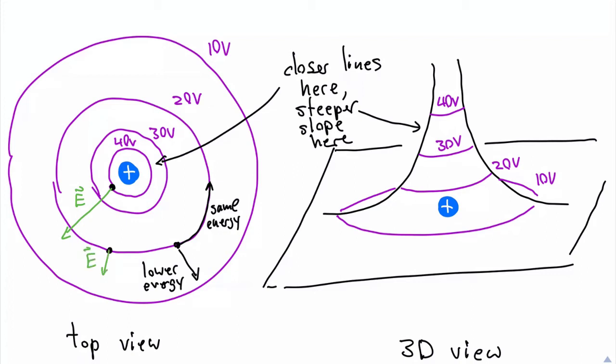Notice that where the electric potential lines are closer together, the electric field is stronger. This is the fundamental relationship between the electric field and the electric potential.